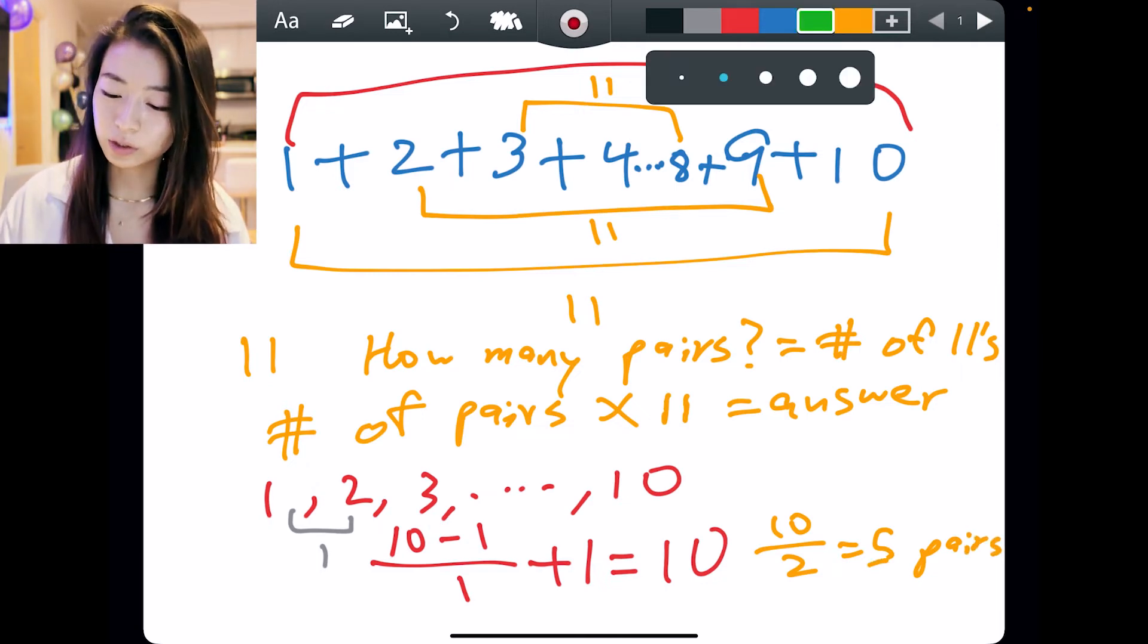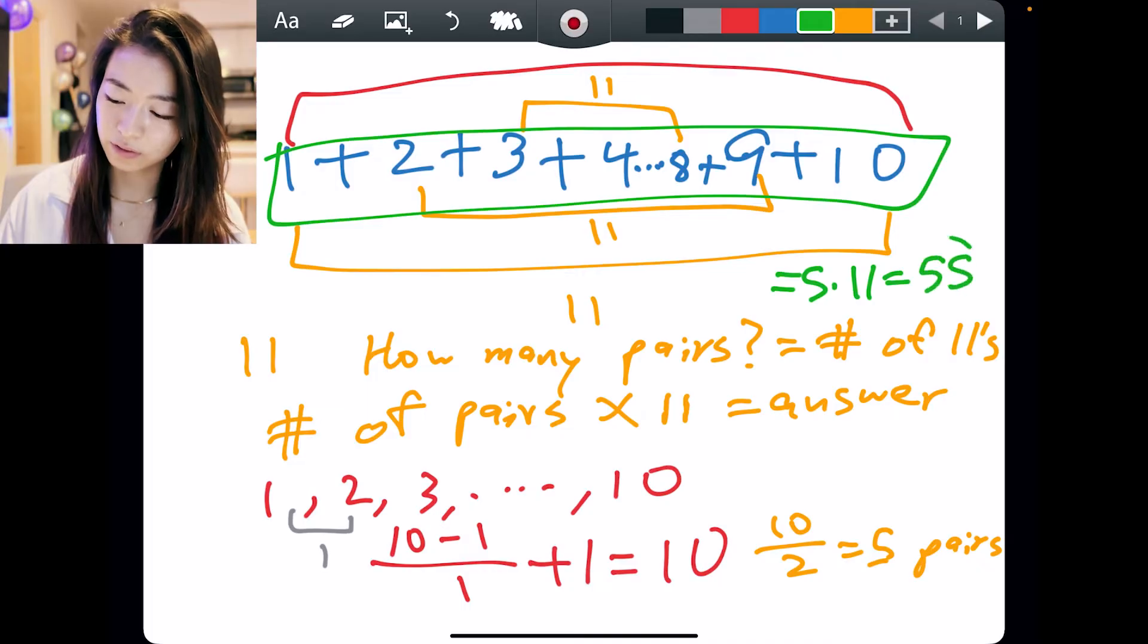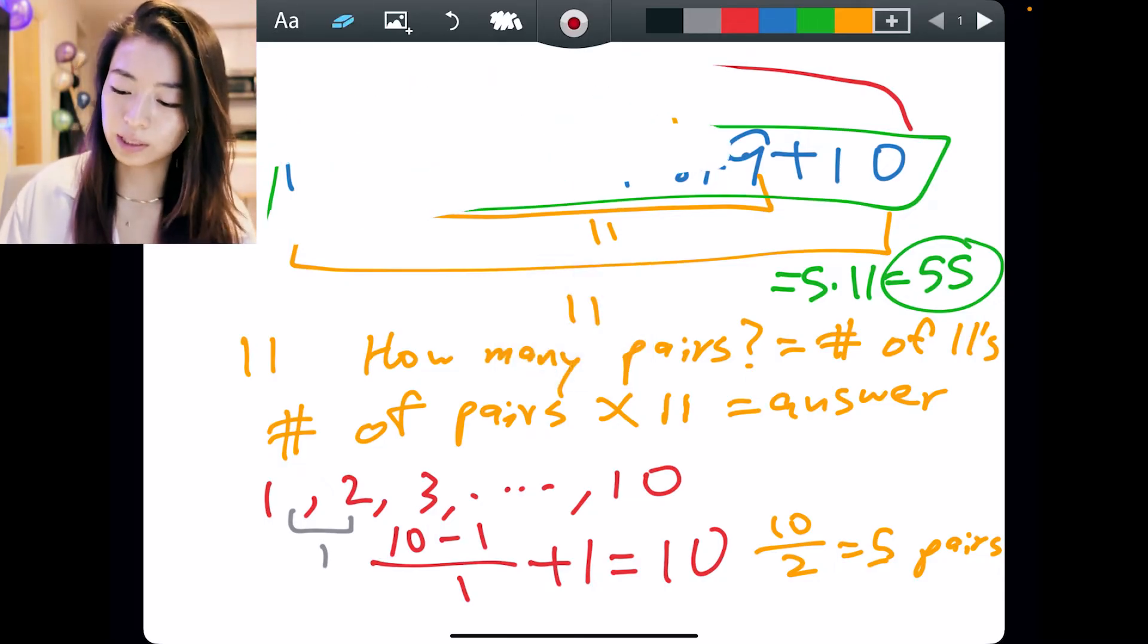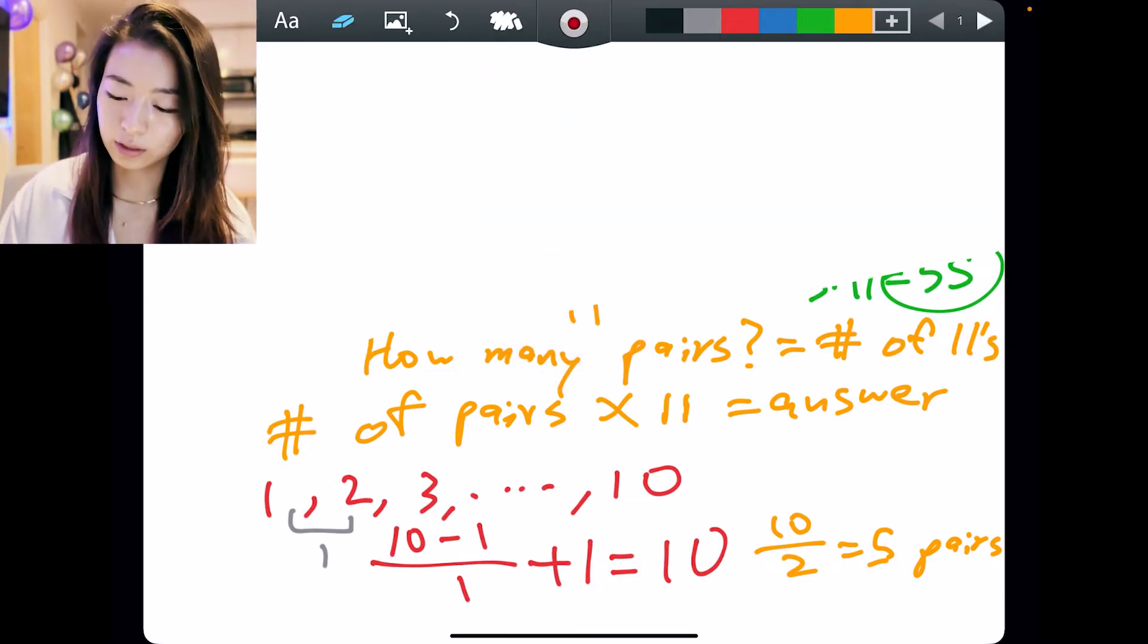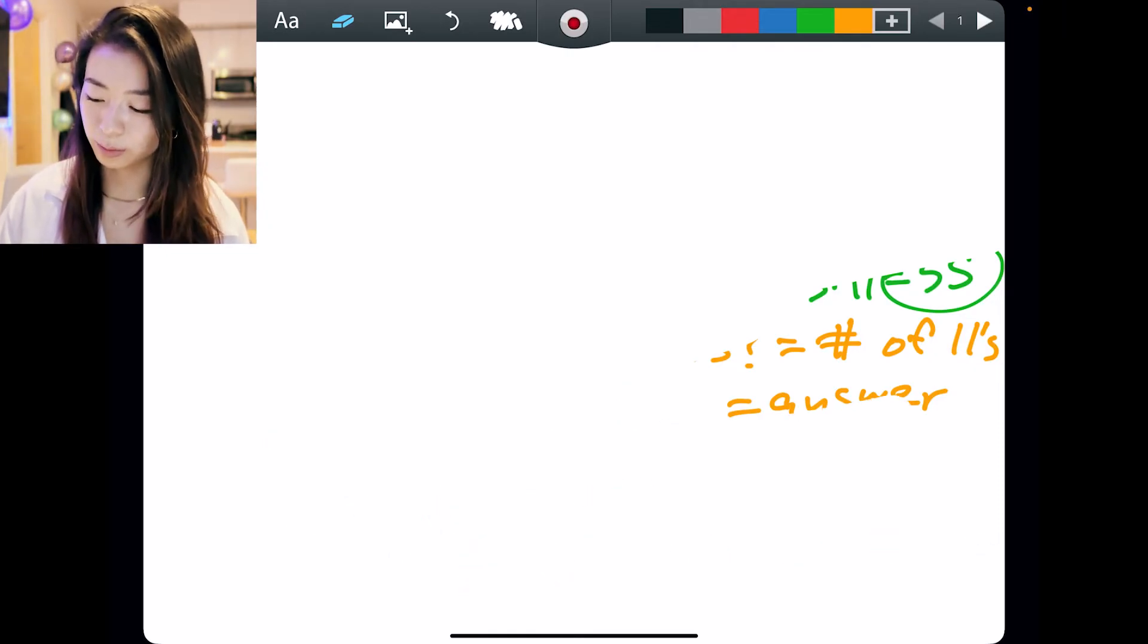Therefore, the original sum here equals 5 times 11, which is 55. Okay, so now that we have this small example down, we understand the formula to use for larger numbers.